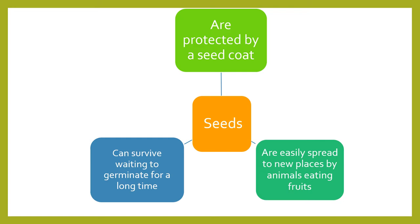Seeds can easily spread to new places because animals eat fruits, swallow the seeds, and from their droppings, the seeds can land in a new place, giving them a chance to spread and germinate somewhere uncrowded. Seeds also have stored food to help them survive while waiting to germinate. Animals are attracted to them because they are inside fruits — this helps seeds, unlike spores which don't have these advantages.